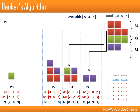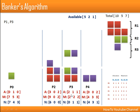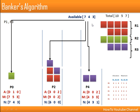After P1 completes and releases all resources, total available becomes 5, 3, 2. This can satisfy requirement 0,1,1 for P3 or 4,3,1 for P4. We go for P3. P3 requires 0 of R1, 1 of R2, 1 of R3 — those are allocated, leaving us with 5 of R1, 2 of R2, 1 of R3. P3 completes execution and releases its resources (including 2 of R1), giving us 7 of R1, 4 of R2, and 2 of R3.